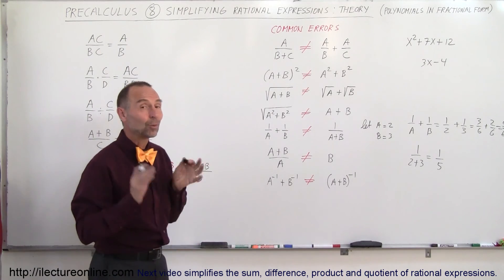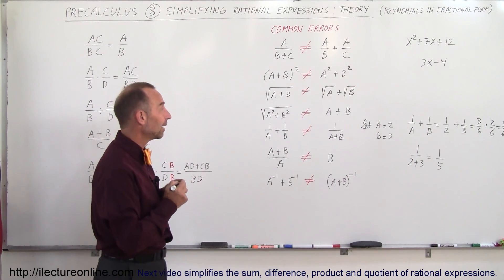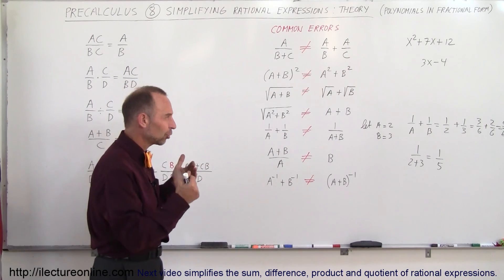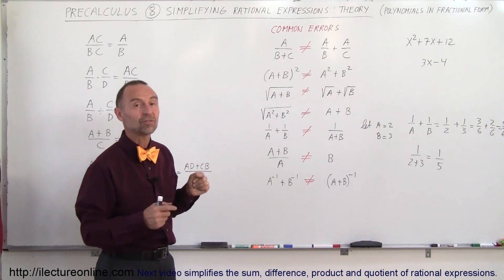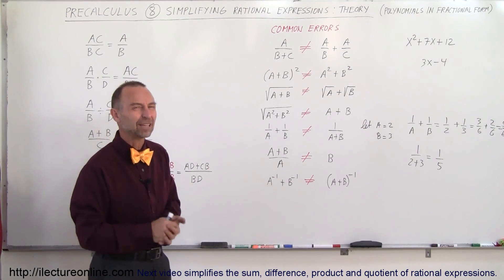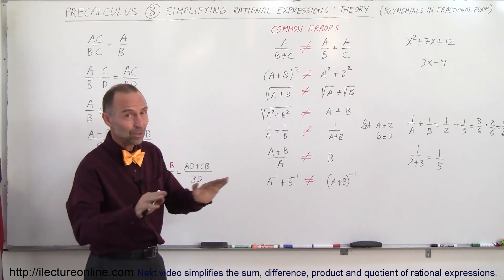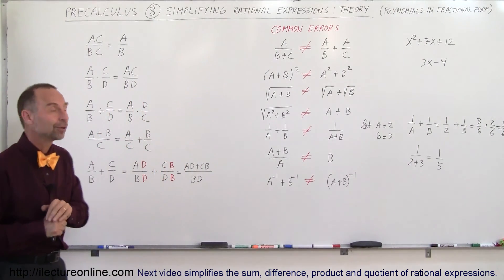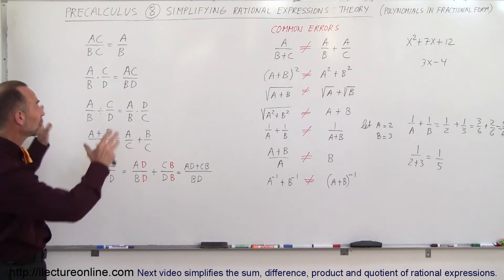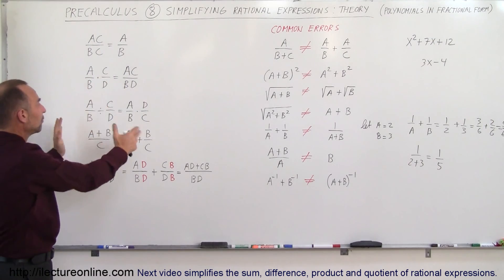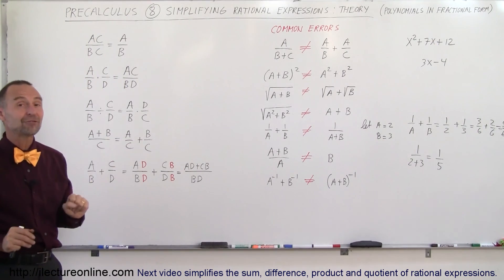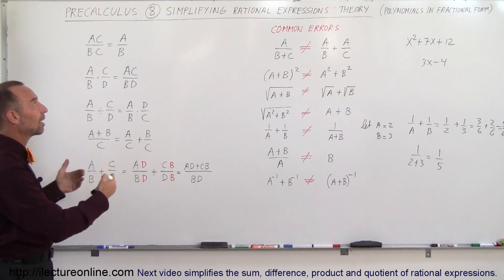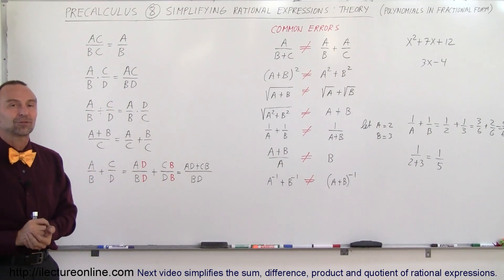These are common errors that can quickly be shown not to be correct. If you are ever unsure what to do, quickly throw some small numbers in and see if you get the same result — that is the way to avoid making common errors. These are the rules you need to follow and the things you need to stay away from. In the next video, we will show some examples of how to simplify rational expressions.